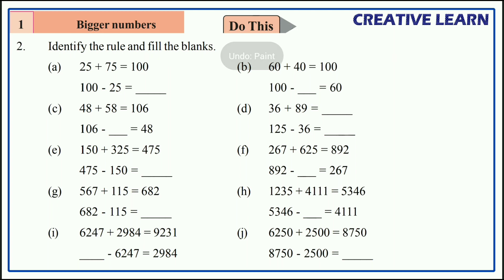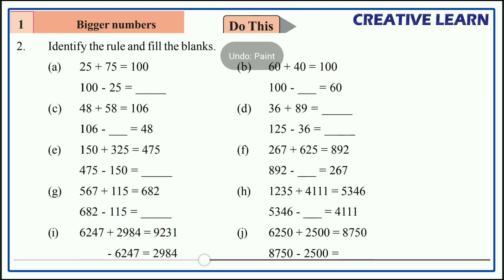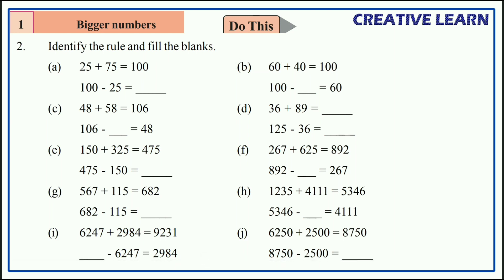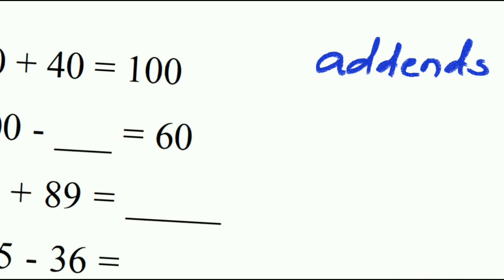Let's see the first one: 25 plus 75 is equal to 100. The sum of these two numbers is equal to 100. When we add two numbers or more than two numbers, the numbers which are being added are called addends.